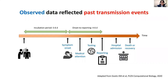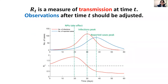So by the time a case is reported to the public health authorities, it's already at least 10 days since exposure or infection. That's why we usually say that observed data reflect past transmission events. But in fighting against the COVID-19 pandemic, what we usually want to know is the transmission probability or transmission potential of this virus in real time. Here is a schematic illustration of a simulated epidemic.